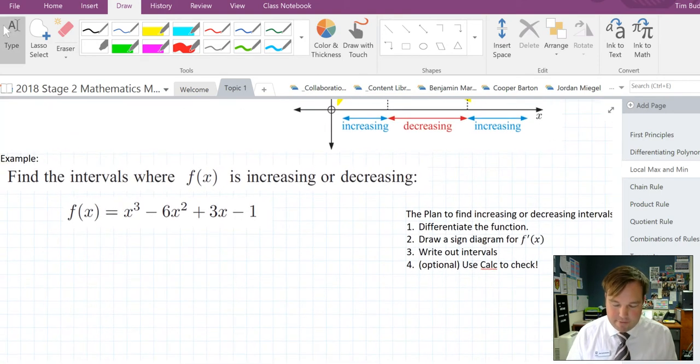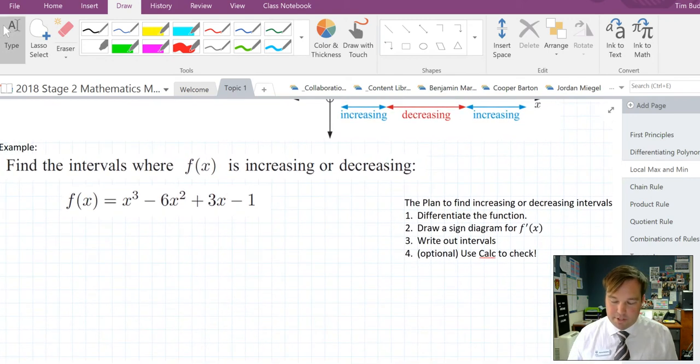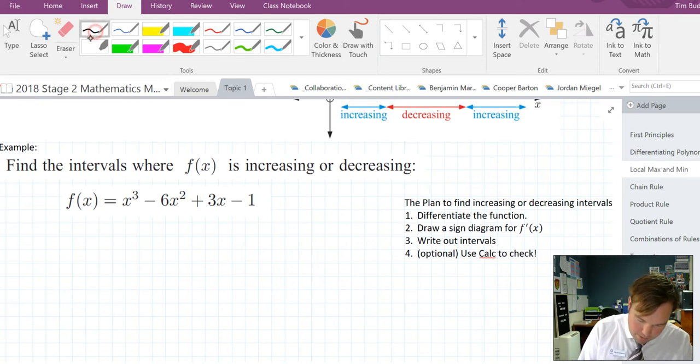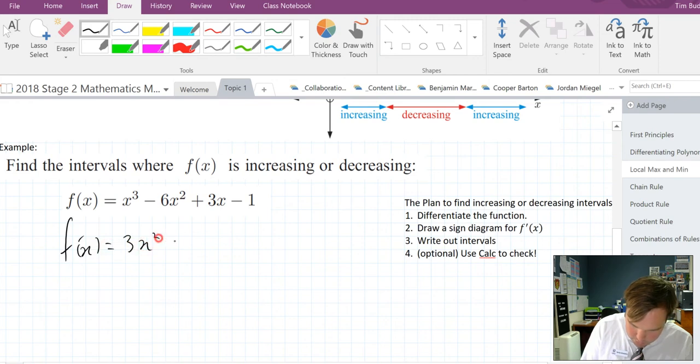Find intervals where f of x is increasing or decreasing. What we do is we differentiate the function, then draw a sign diagram for the differential, or f dash x, and write out the intervals. If we want, we can graph it to just double check what we're doing. So let's find f dash x: 3x squared take 12x plus 3.